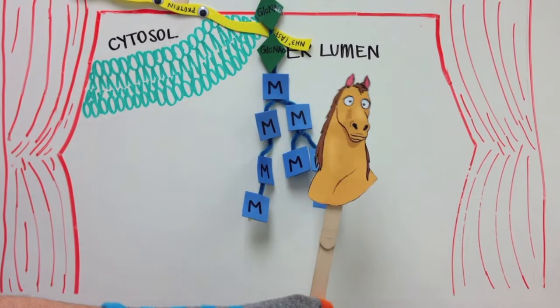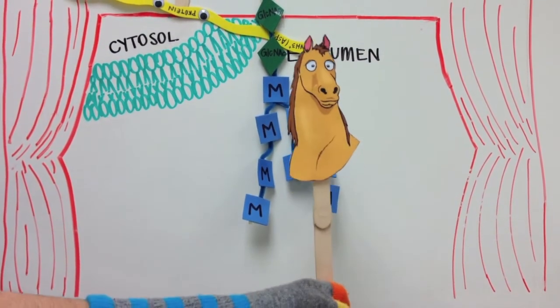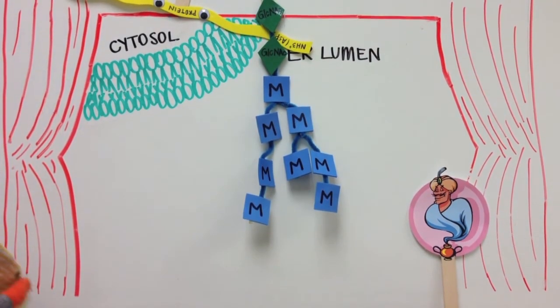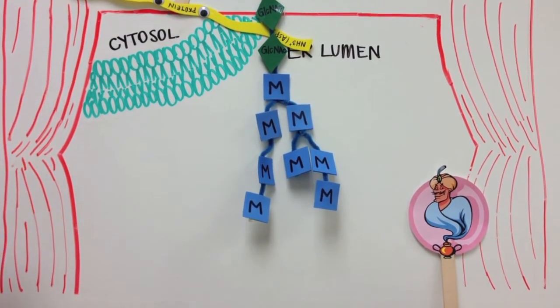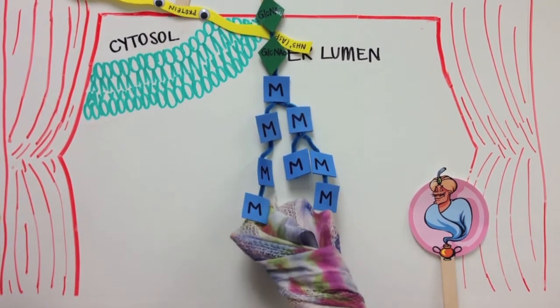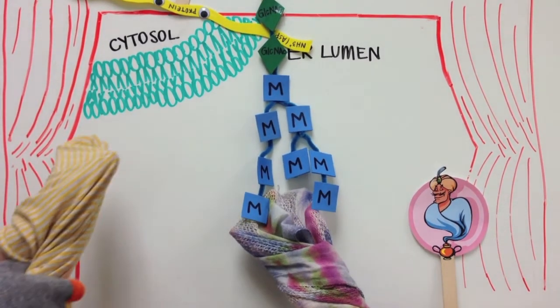This seems awful complicated. Won't things go wrong? There is a system in place to deal with improperly synthesized proteins. In the ER lumen, this glycoprotein is held by the CNX-CRT protein complex, while heat shock proteins engage in folding.